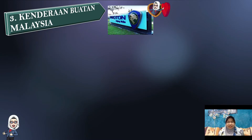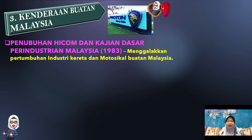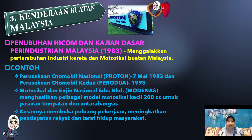Yang terakhir, pencapaian dalam aspek ekonomi ialah merujuk kepada kenderaan buatan Malaysia. Penubuhan HICOM dan kajian dasar perindustrian Malaysia pada tahun 1983 telah menggalakkan pertumbuhan industri kereta dan motosikal buatan Malaysia. Antara contohnya ialah Perusahaan Otomobil Nasional, Proton dan Perodua, termasuklah motosikal dan enjin nasional Sendirian Berhad iaitu MODENAS. Kesannya, ia telah membuka peluang pekerjaan, meningkatkan pendapatan rakyat dan taraf hidup masyarakat di Malaysia.